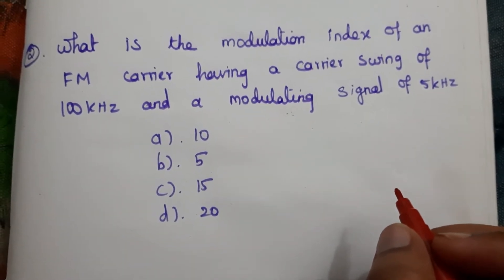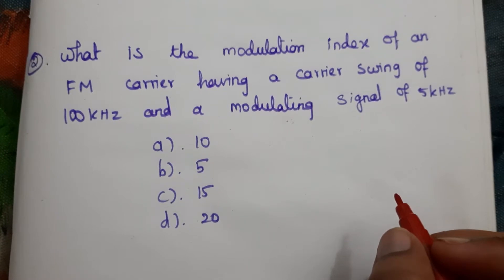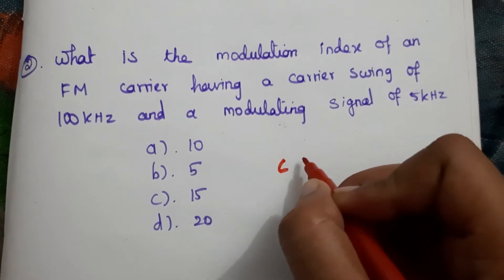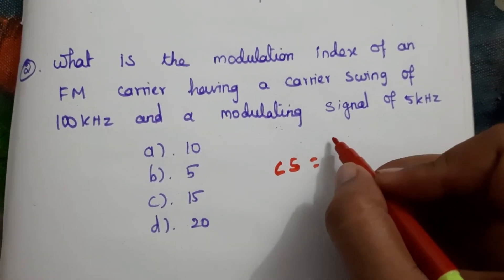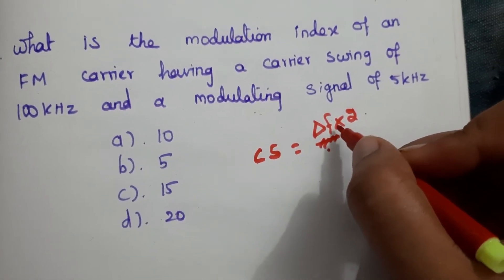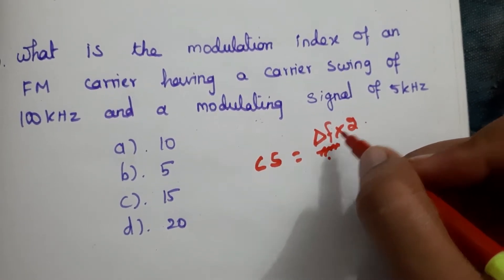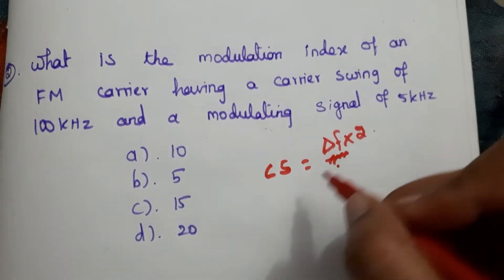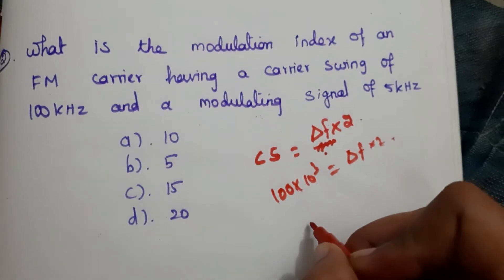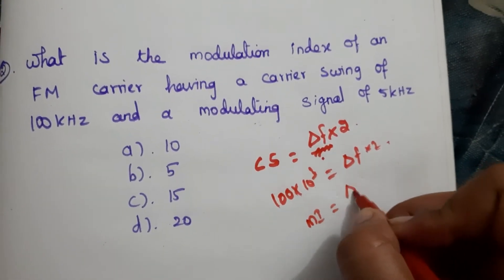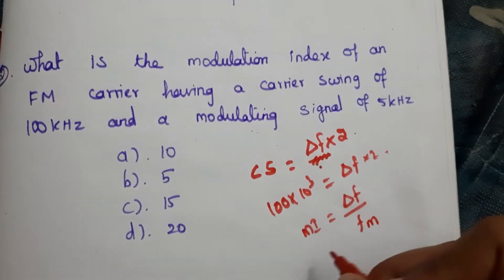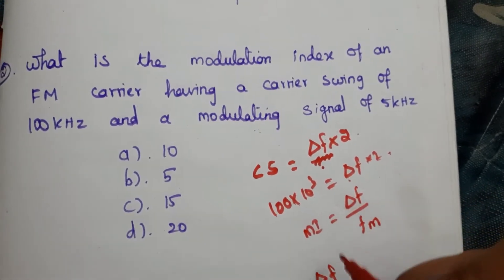Second question: What is the modulation index of an FM carrier having a carrier swing of 100 kilohertz and a modulating signal of 5 kilohertz? The carrier swing equals 2 times the frequency deviation (Δf). The modulation index formula is Δf divided by the message signal frequency.